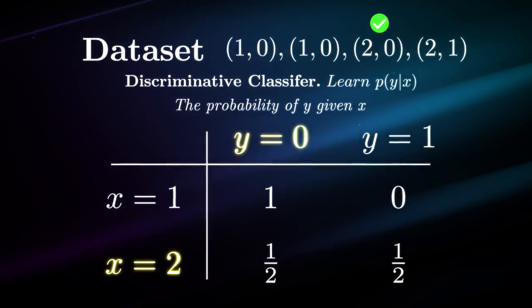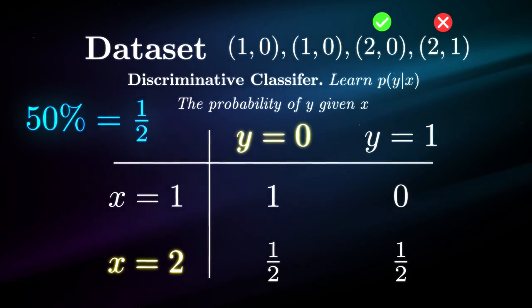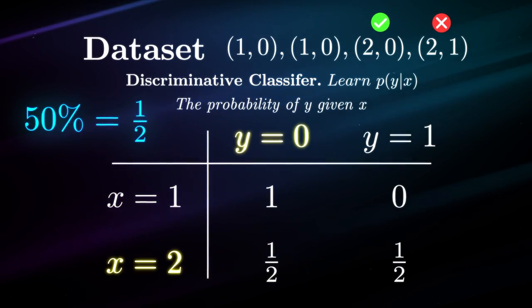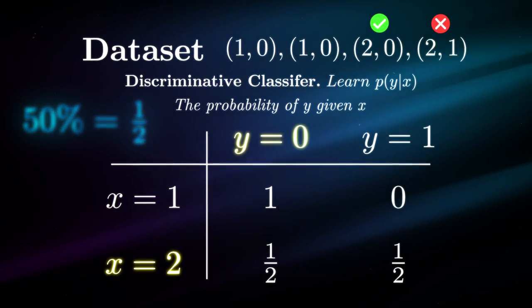Now how about when we're given X equals two? If we iterate through those data points where that's a given, we'll find that only half of them have Y equals zero. Thus the probability is one half.